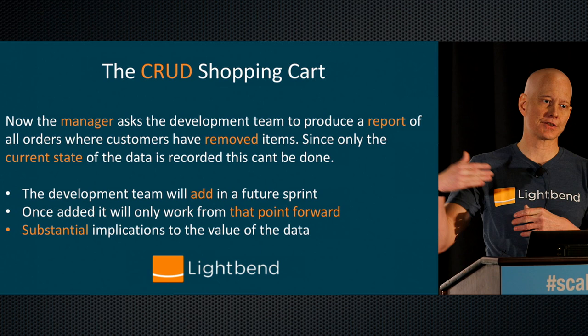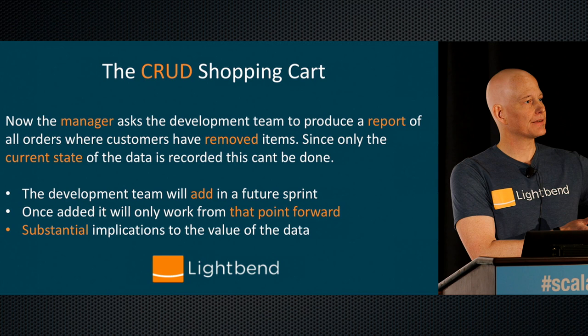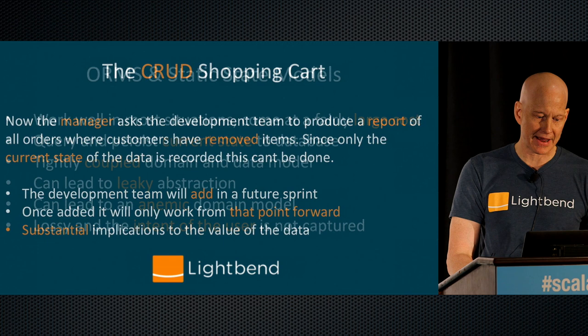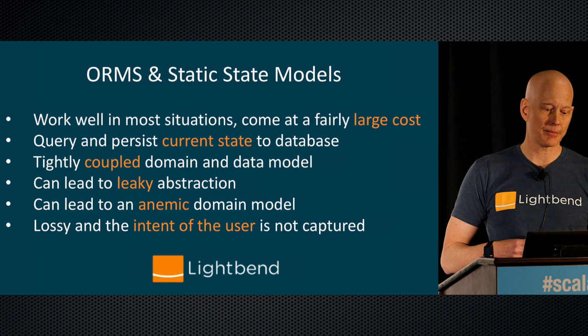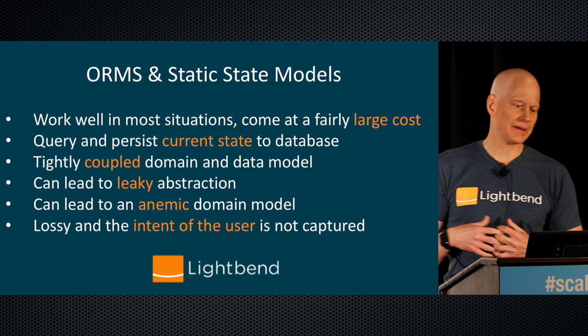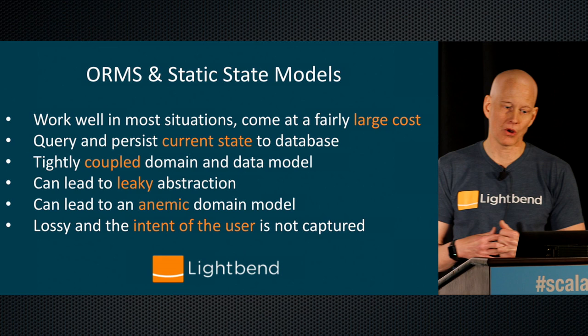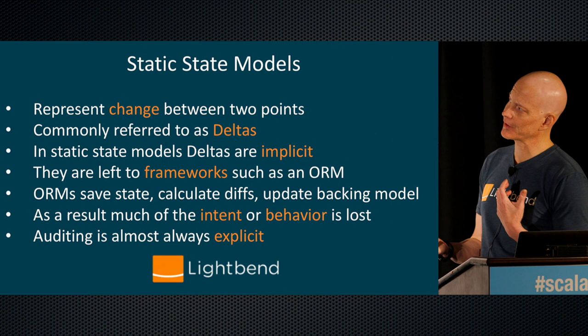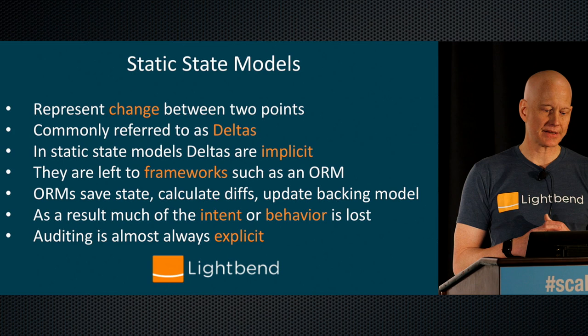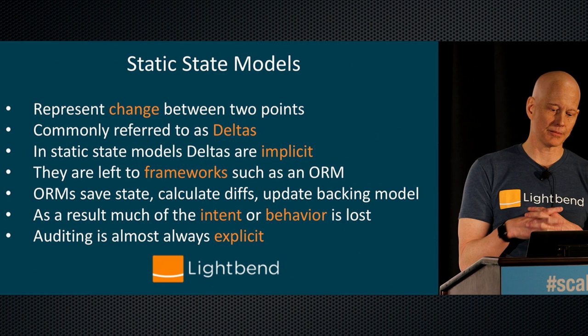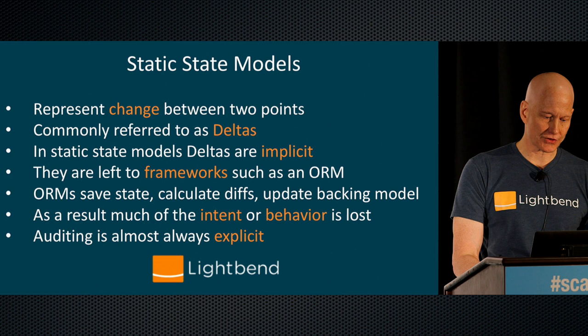But the reality is it's only from the point that it's deployed that you can provide that information — all that historical data is lost. There's no way to derive that information, and that's a substantial business impact. That's how static state models and ORMs work. They're good; they work. But they come at a large cost: they maintain current state, your domain is tightly coupled to the model, you deal with leaky abstractions and anemic domain models. Ultimately, the intent of the user — the purpose of how they're using the system — is lost because you're only capturing current state.